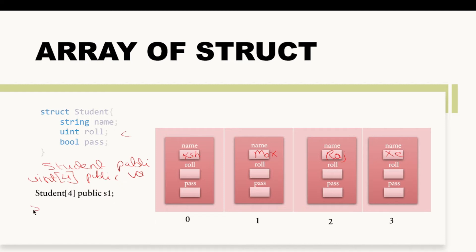If I want to store the data of 100 students, I can simply write Student, then 100, then public, and then the variable name — let's say students. You can do such things in Solidity. Now let us see this with the help of an example on Remix IDE.